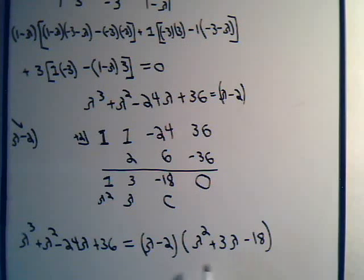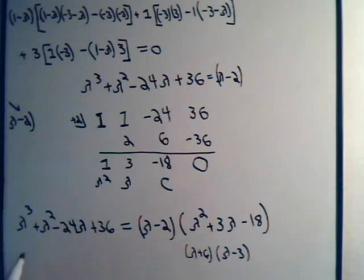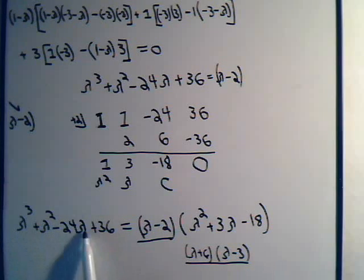Can we factor this out now without having to use synthetic division? We have to have two numbers multiplied together, this is minus 18, and add it together gives us plus 3. 9 times 2 won't do it. 6 and 3. If we had lambda plus 6, lambda minus 3, that would give us the minus 18 and the plus 3. So there it is. These would be the prime factors of this polynomial.